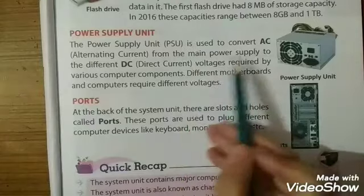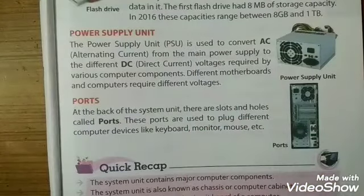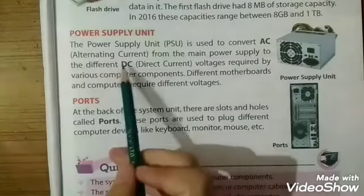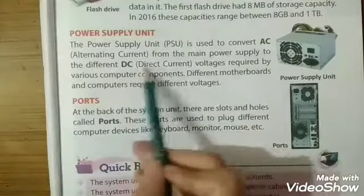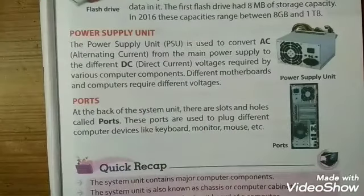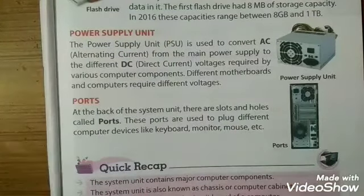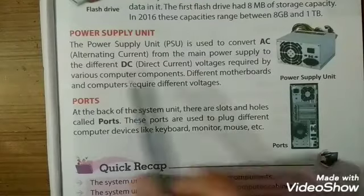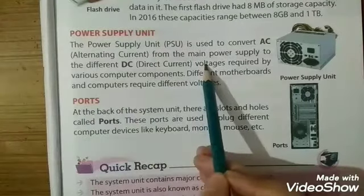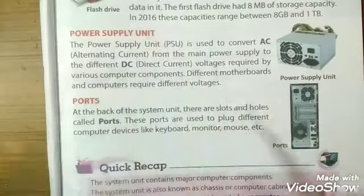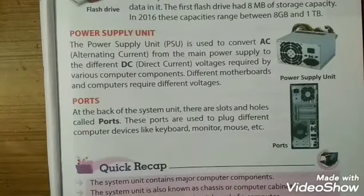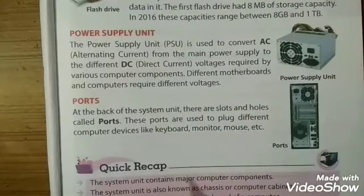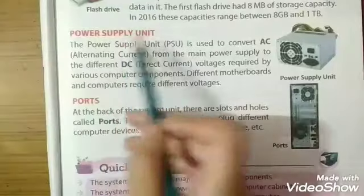Our main power supply is alternating current. We convert it to DC voltages using the power supply unit. Different motherboards and components of the computer require different voltages, which the PSU maintains and converts accordingly.